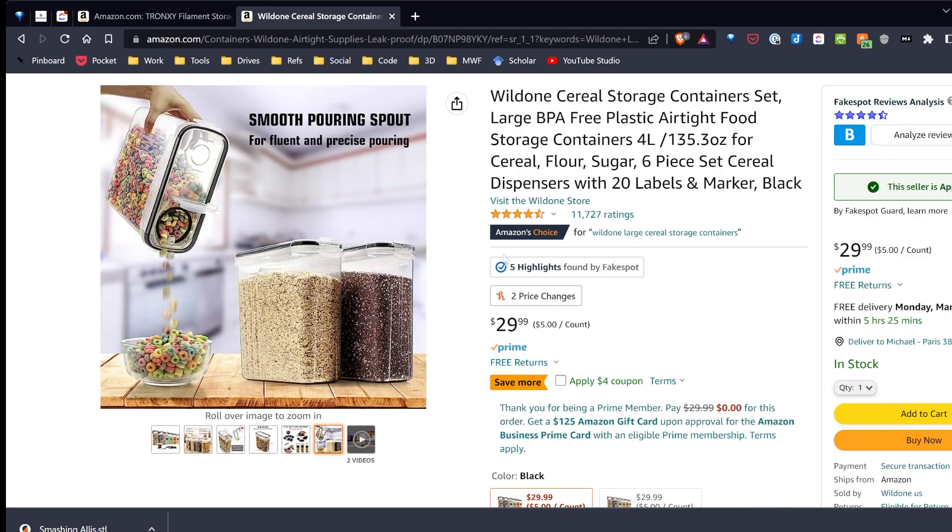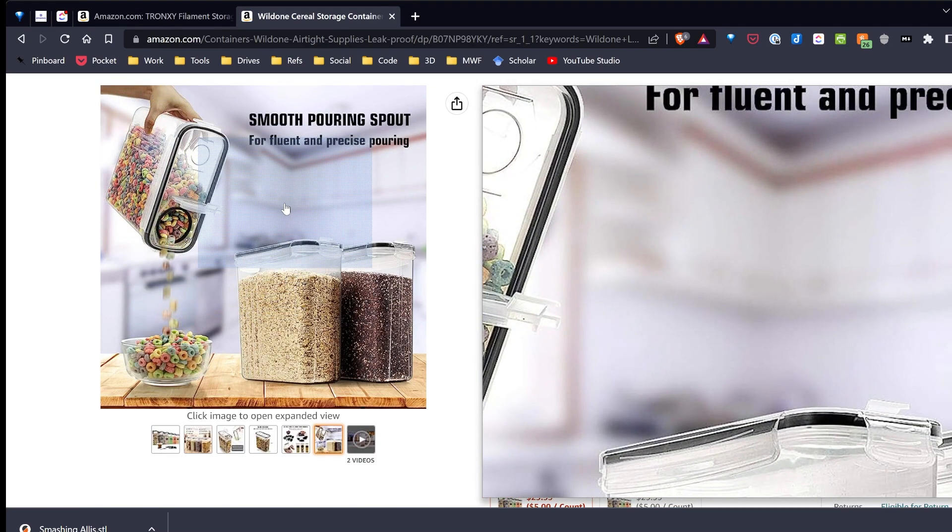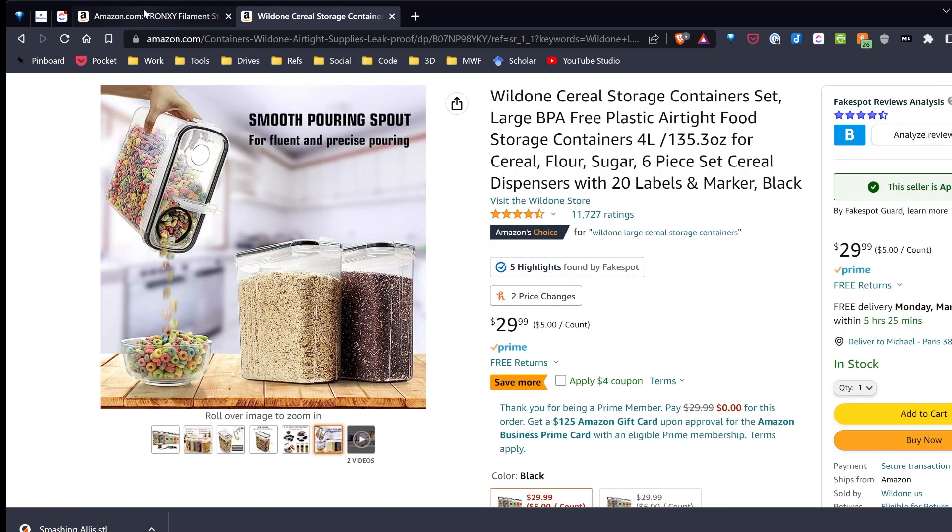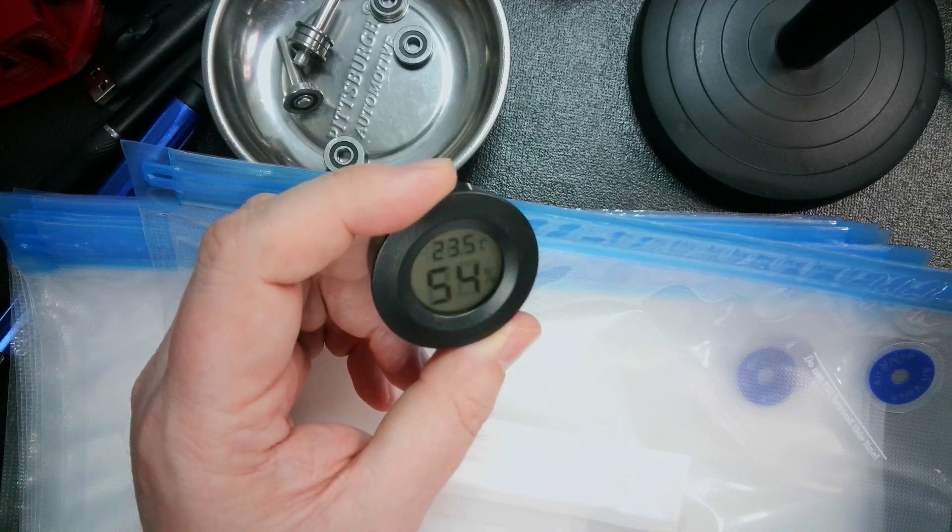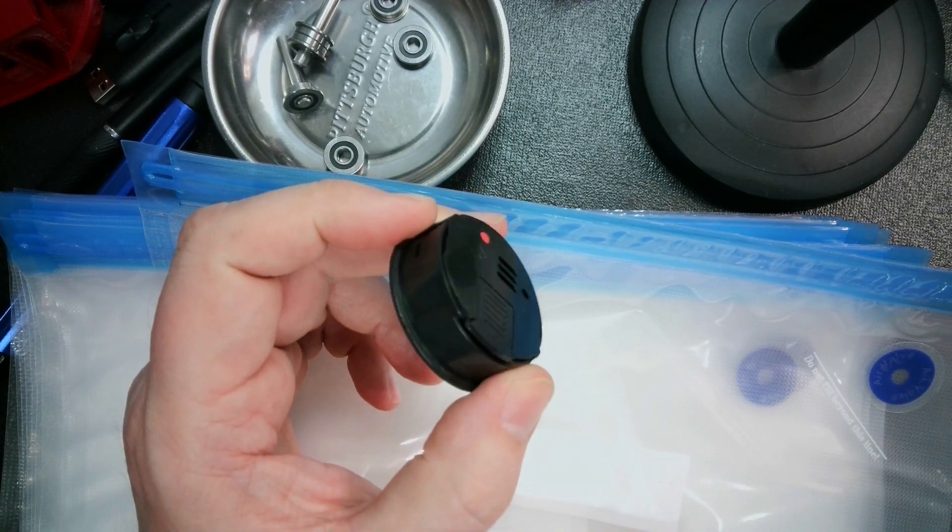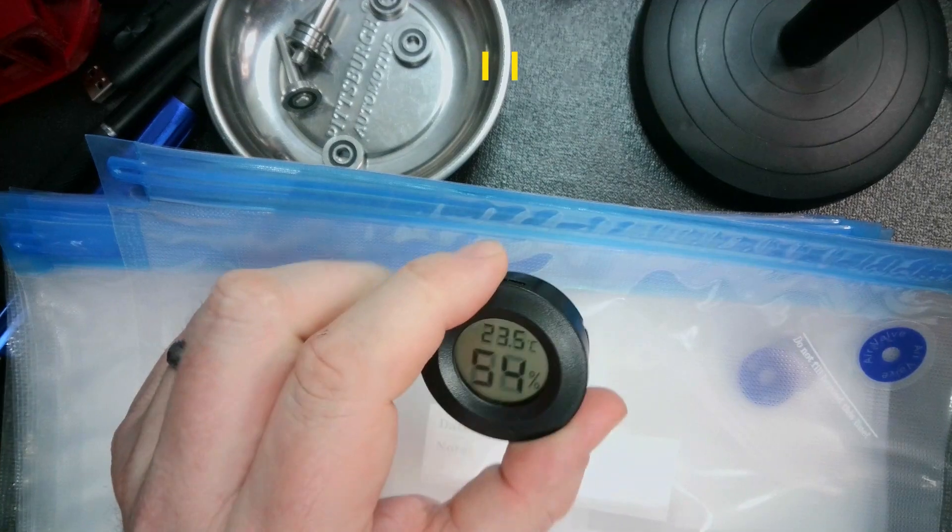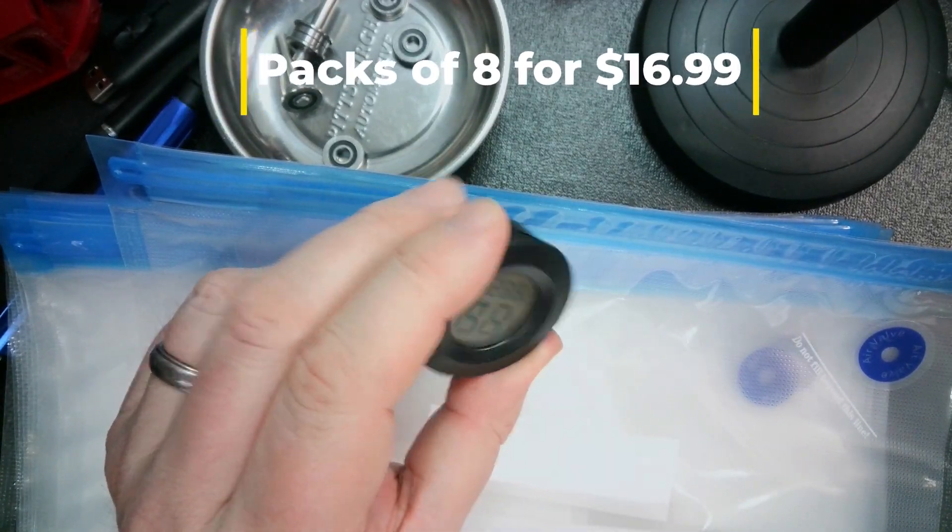Once I add in everything, it's probably about six dollars per dry box, and the bags are about two dollars once I add in the desiccant as well as these little sensors I use. Here's the sensors I use and they come in packs of a couple. I'll put links in the video description.